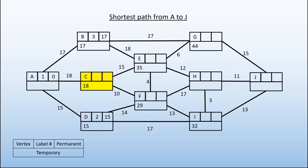C is our next vertex with the smallest value as a temporary label. This is vertex number 4 that we have worked on, and its permanent label becomes 18.